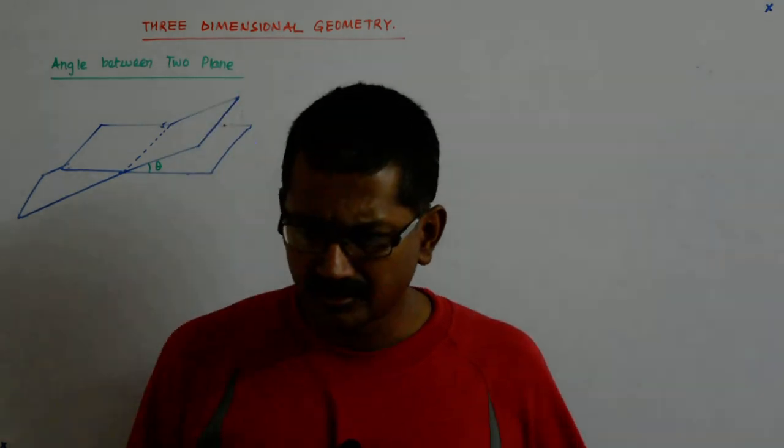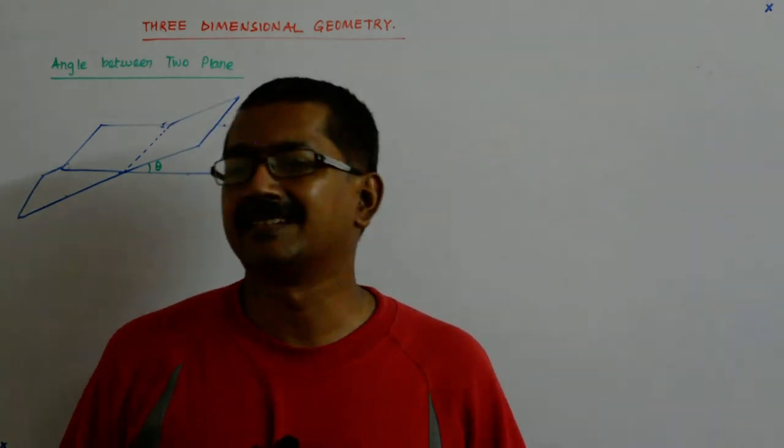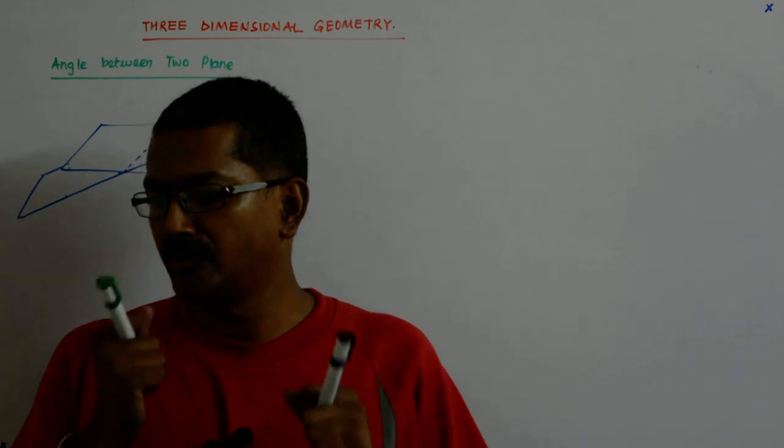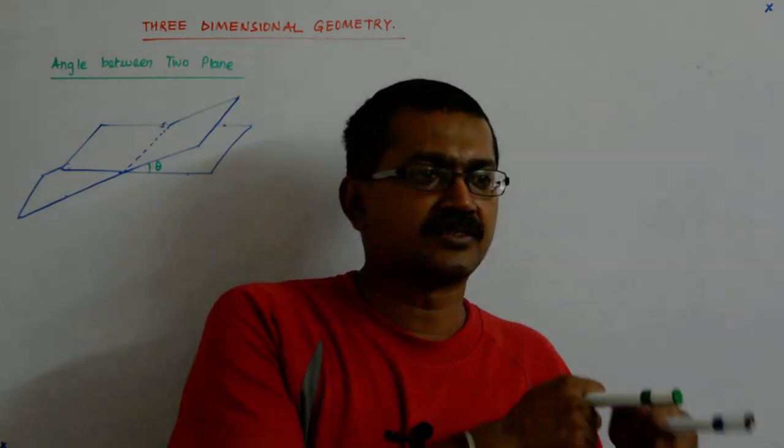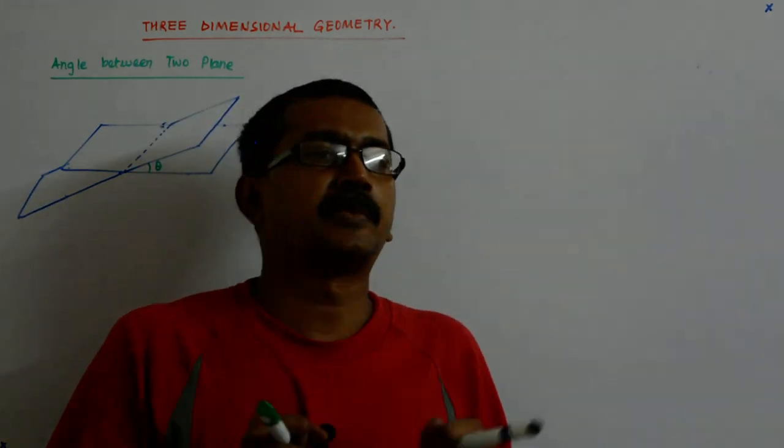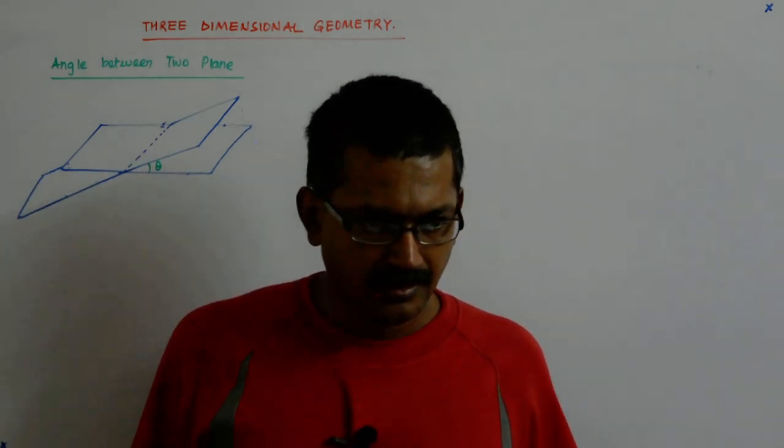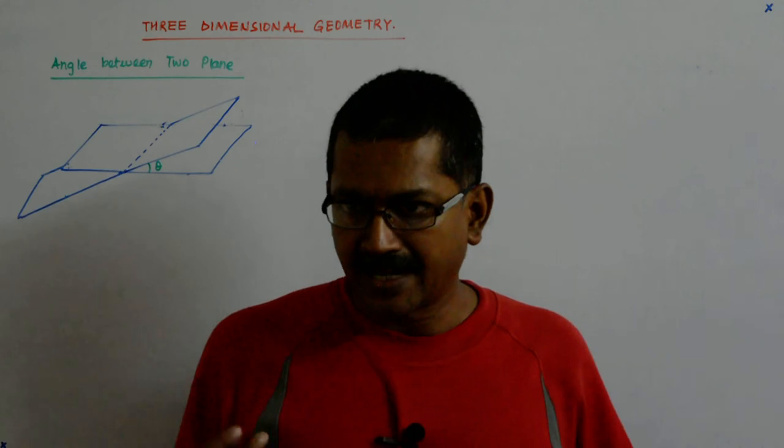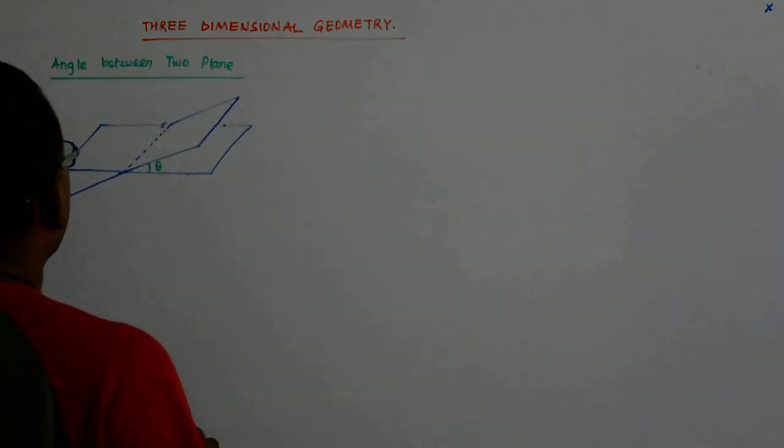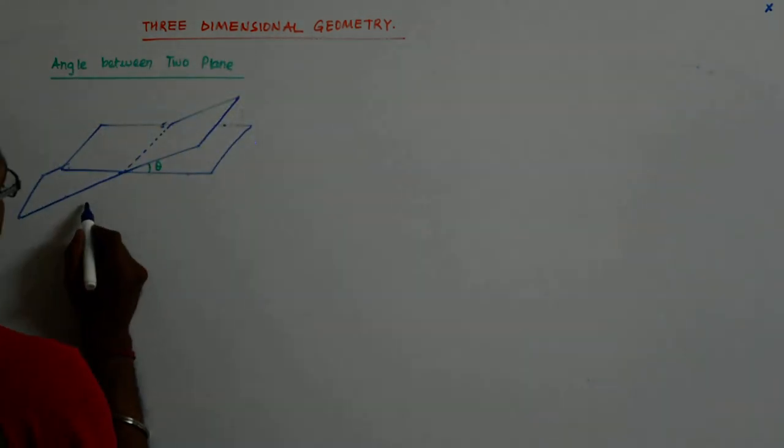If I am given two vectors, will you be able to tell me the angle? Yes. A dot B is equal to mod A mod B cos theta. So cos theta is equal to A dot B divided by mod A mod B. So it is quite simple, isn't it?